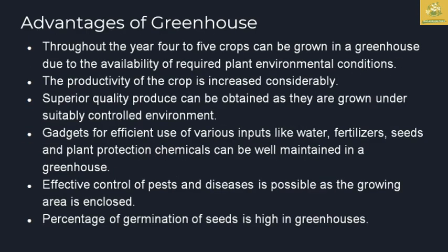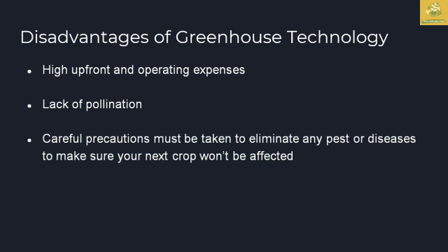The advantages of greenhouse technology include: throughout the year, around four to five crops can be grown due to the availability of required plant environment conditions. Productivity is increased considerably, and superior quality produce can be obtained under suitable controlled environment. There is efficient use of inputs like water, fertilizer, seeds, and plant protection chemicals. Control of pests and diseases is possible in the closed area, and the percentage of seed germination is high in greenhouses compared to open fields.